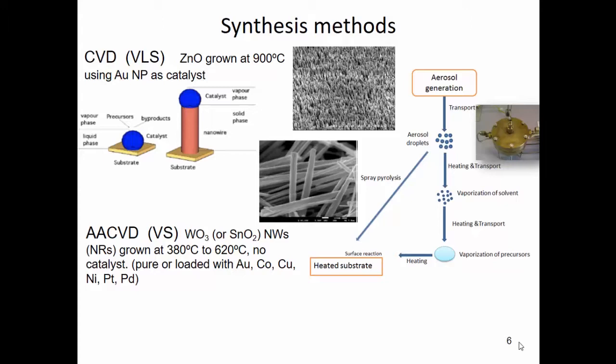The growth temperature spans a wide range: for tungsten trioxide, we can grow nanowires at around 380°C, and for tin oxide we go up to 620°C. We can grow these nanowires or nanorods either pure or decorated with metal nanoparticles. We have tried gold, cobalt, copper, nickel, platinum, and palladium. In most cases, what we get are not just metal nanoparticles but metal oxide nanoparticles. The aerosol-assisted CVD method does not require volatile precursors — you dissolve them in solvents, generate droplets with an ultrasonic vaporizer, and convey them to the reactor.